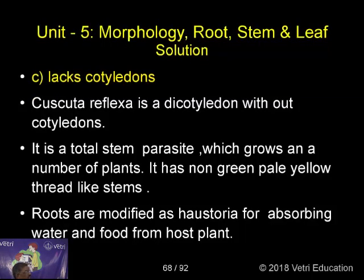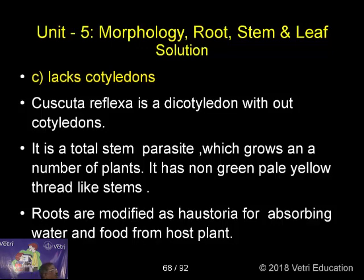Cuscuta reflexa is a dicotyledon without cotyledon. It is a total stem parasite which grows on a number of plants. It has non-green, pale yellow thread-like stems. Roots are modified into haustoria for absorbing water and food materials. Lax cotyledon is an example of a dicot, Cuscuta reflexa.